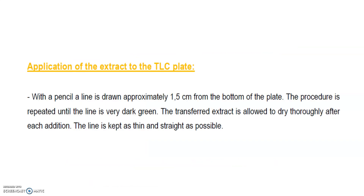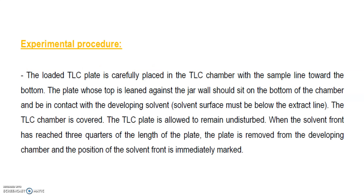With a pencil, a line is drawn approximately 1.5 cm from the bottom of the TLC plate. The extract is applied to the line and the procedure is repeated until the line is very dark green, allowing the transfer extract to dry thoroughly after each addition. The line is kept as thin and straight as possible. The loaded TLC plate is carefully placed in the TLC chamber with the sample line toward the bottom; the plate leans against the jar wall and contacts the developing solvent. The solvent surface must be below the sample line. The TLC chamber is covered and the plate is left undisturbed until the solvent front has reached three-quarters of the plate length, then the plate is removed and the solvent front position is immediately marked.